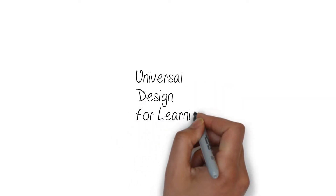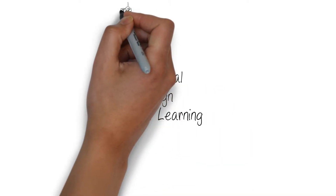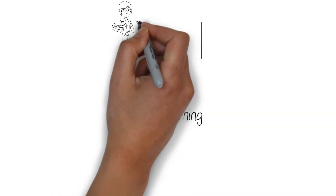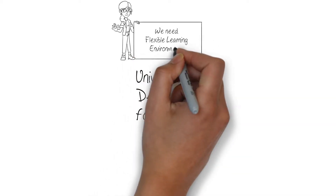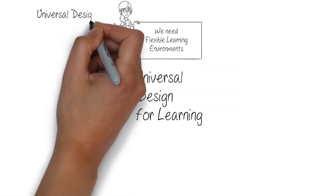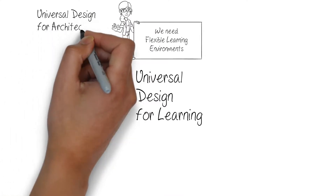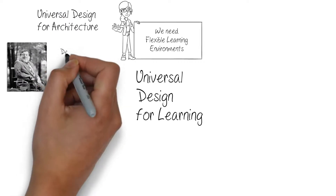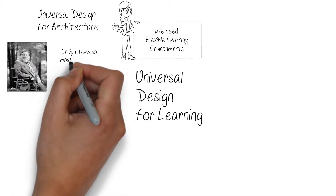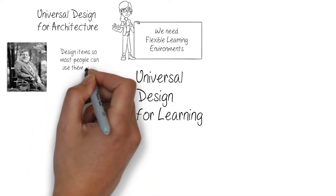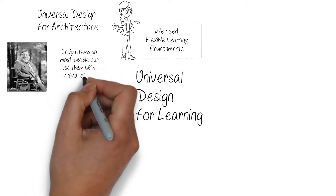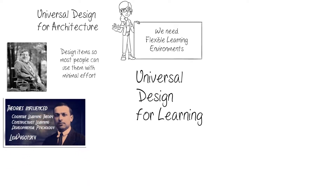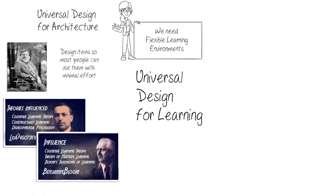Universal Design for Learning is a framework that offers guidelines for developing flexible learning environments to accommodate all the different learning styles and pedagogical needs of students. Founded by David Rose in the 1990s, it draws heavily on Ronald Mace's Universal Design in Architecture, prescribing designing products and environments usable by all people to the greatest extent possible without need for significant adaptation — simply, design items so that most people can use them with minimal effort. The theory also draws heavily on cognitive learning theories promoted by the work of both Vygotsky and Bloom.